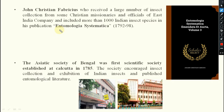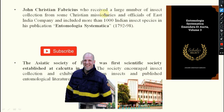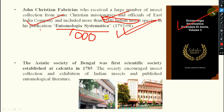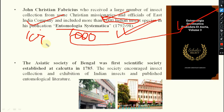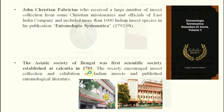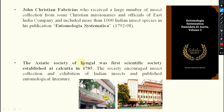Jesse Fabricius received a large number of insect collections from Christian missionaries and officials of the East India Company and included 1000 insect species in his publication Entomologia Systematica — very very important. Also important: the Asiatic Society of Bengal was the first scientific society of India, established at Kolkata in 1785. Note the dates: 1758 for Systema Naturae and 1785 for the Asiatic Society — don't get confused.